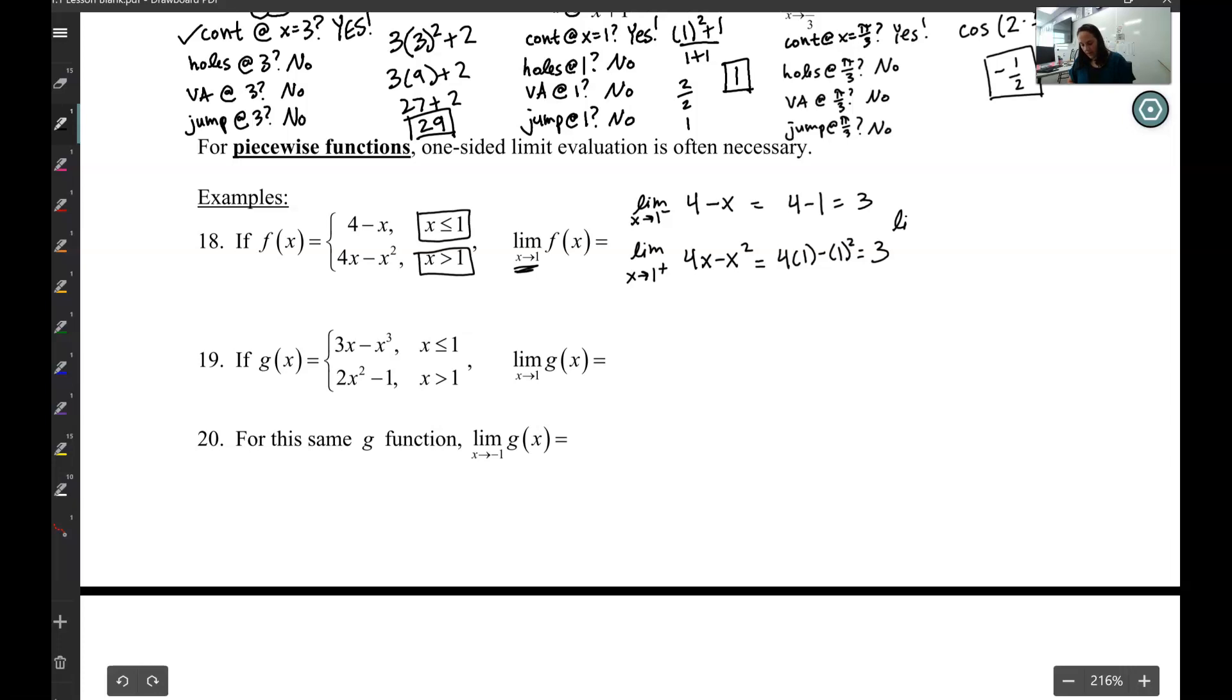So I can say the limit as x approaches 1 to the left of f(x) equals the limit as x approaches 1 from the right of f(x), which means the limit as x approaches 1 of f(x) equals 3.